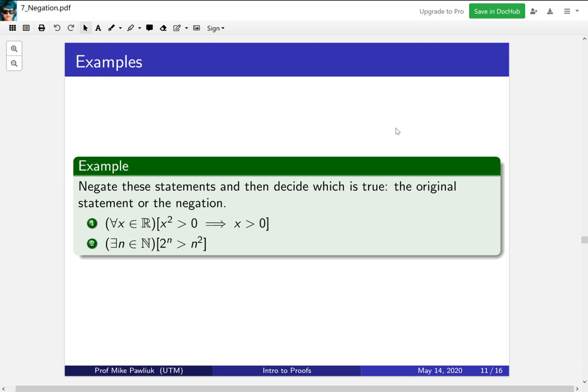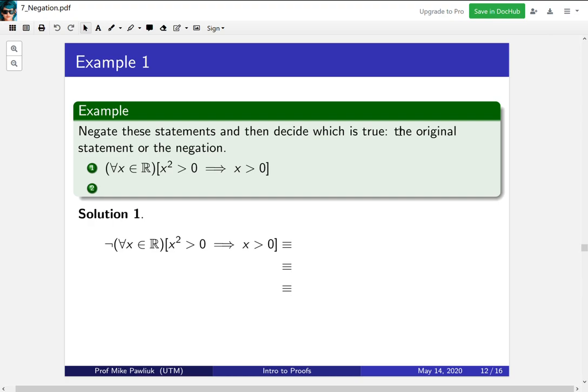All right, let's take a look at these. Let's start with the first one. For every real number, if x squared is greater than zero, then x is greater than zero. We're going to go through the negation of this formally. So we start with the negation, and if you're trying to negate a for all statement, it becomes a there exists statement where the property is negated. Put another way, you can think of it as pulling the negation in one layer. So we pull the negation in one layer, the for all becomes a there exists.